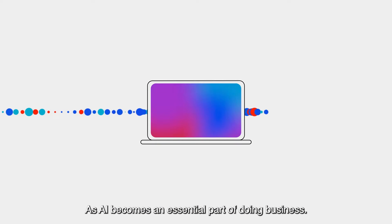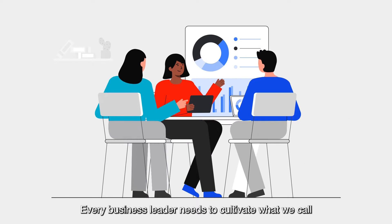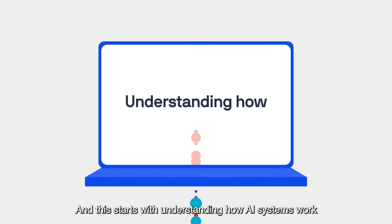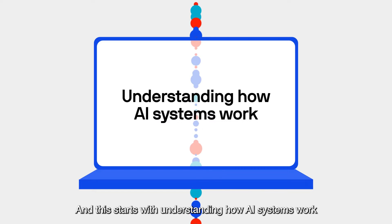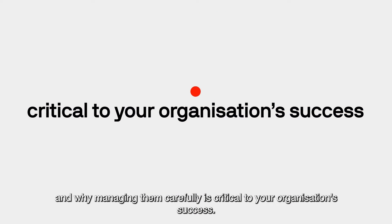As AI becomes an essential part of doing business, every business leader needs to cultivate what we call a minimum viable understanding around AI. And this starts with understanding how AI systems work and why managing them carefully is critical to your organisation's success.